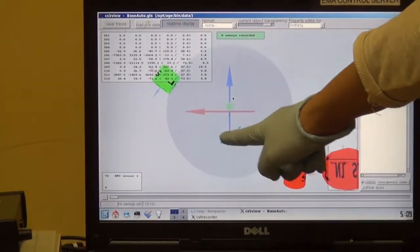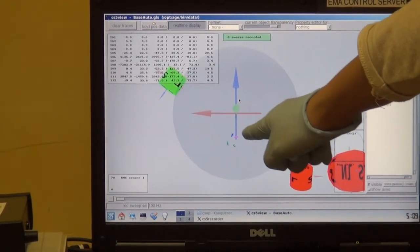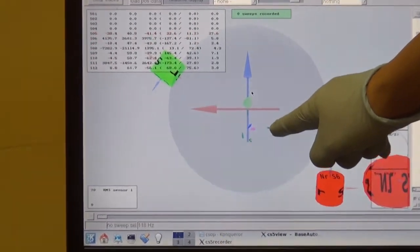You see this? These are the two tongue sensors, the two lips, the two upper and lower gum sensors, and this is the tongue tip.